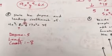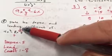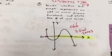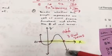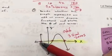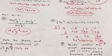Number eight: state the degree and leading coefficient. The degree is the highest power; the leading coefficient attached to x to the fifth is negative five. Opposite signs mean you have an odd-degree function. The number of real zeros is how many times it crosses the x-axis — one, two, three times. That is your first page.